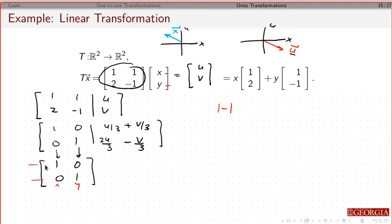Also, if I go across the rows, every row has a pivot, so no matter what u and v you give me, I can always find at least one x and y, so it's also onto.